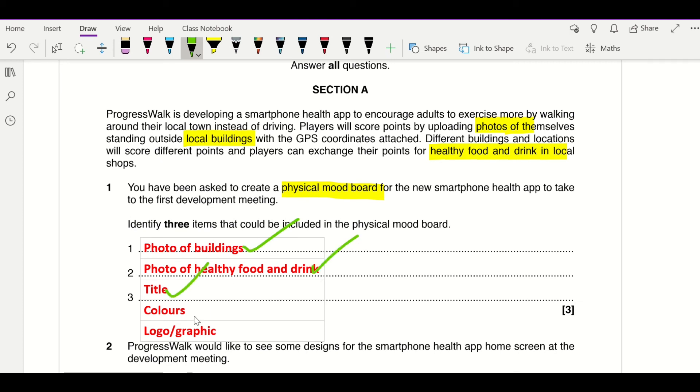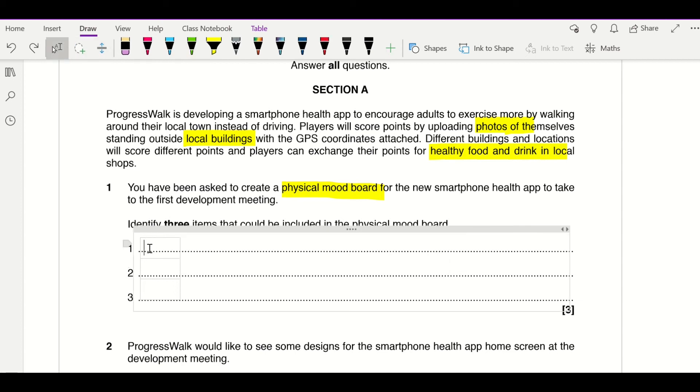Something to keep in mind as well is don't repeat items on the mark scheme which come under the same mark band. So if you had materials for example, and then you had fabrics, and you then had images, so you'd get one mark for your first one, but you wouldn't get a mark for the second one because it comes under the same mark band as materials, and then you would get a mark for images.